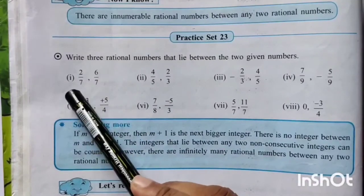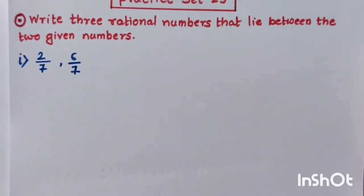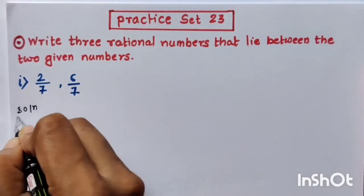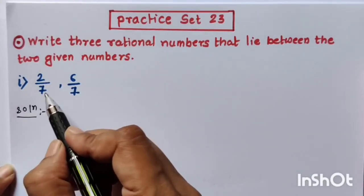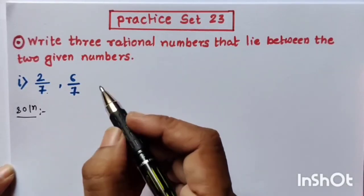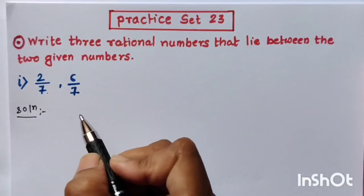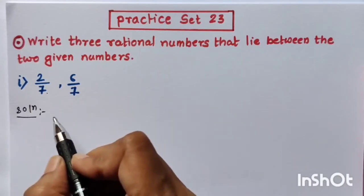Let us see sum number 1: 2 upon 7 and 6 upon 7. We have to find three rational numbers which lie between these two rational numbers. In 2 upon 7, numerator is 2 and denominator is 7. In 6 upon 7, numerator is 6 and denominator is 7. In both these numbers, you can see the denominator is the same — denominator is common.